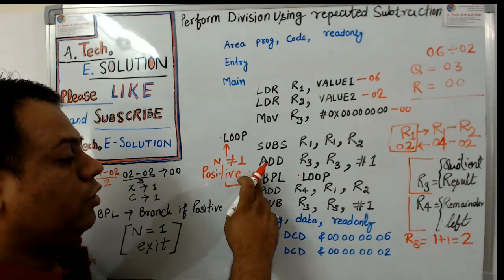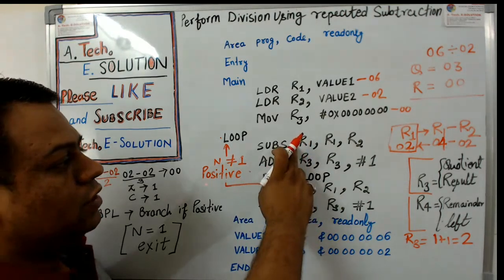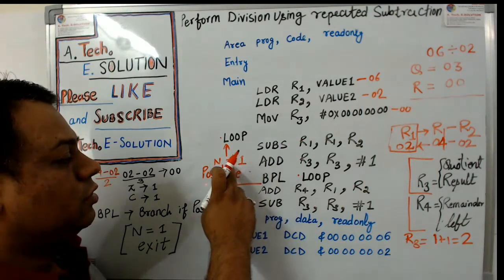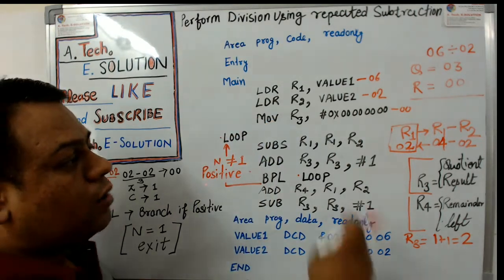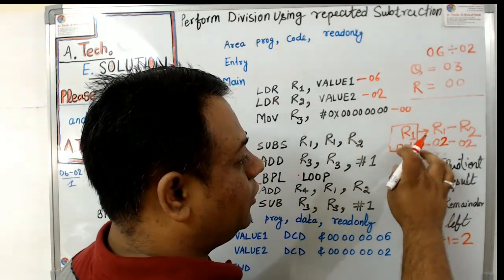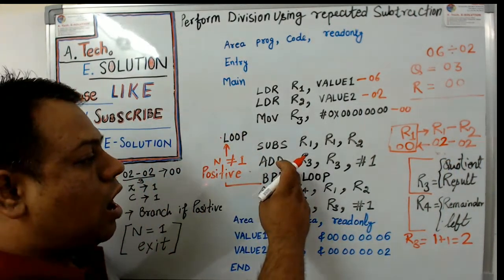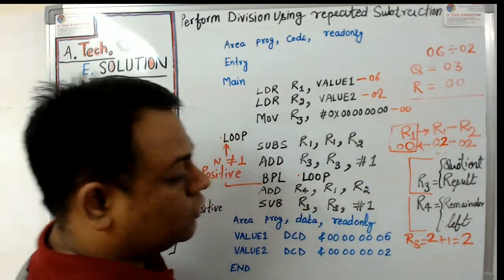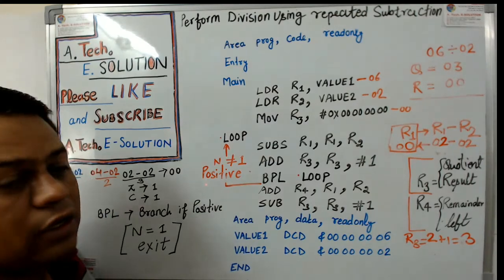Again we use the BPL instruction. It checks this result. The result is 02, which is positive, so the negative flag is not set, and we branch back to the loop. R1 is again subtracted by R2: R1 is 02 and R2 is 02, so we get a result of 00. R3 was 2, and we add 1 to get 03, so R3 equals 3.